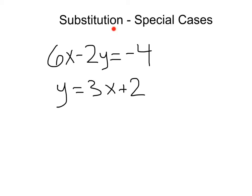When solving systems of equations by substitution, there's some special cases we want to talk about. 6x minus 2y equals negative 4. We got y equals 3x plus 2.